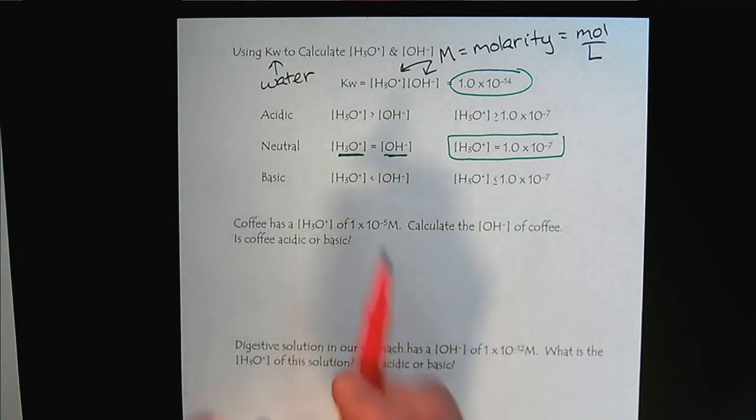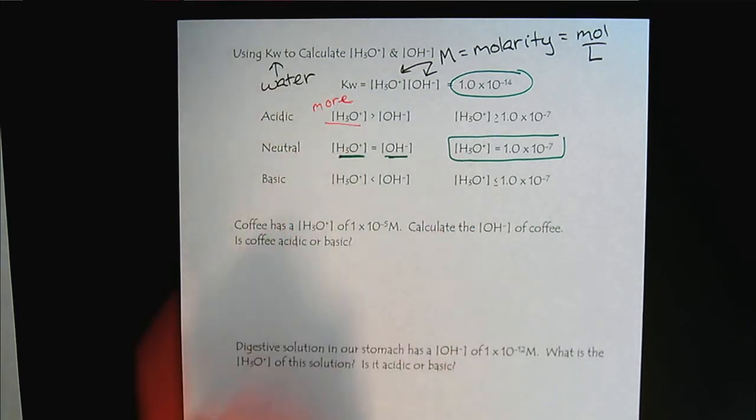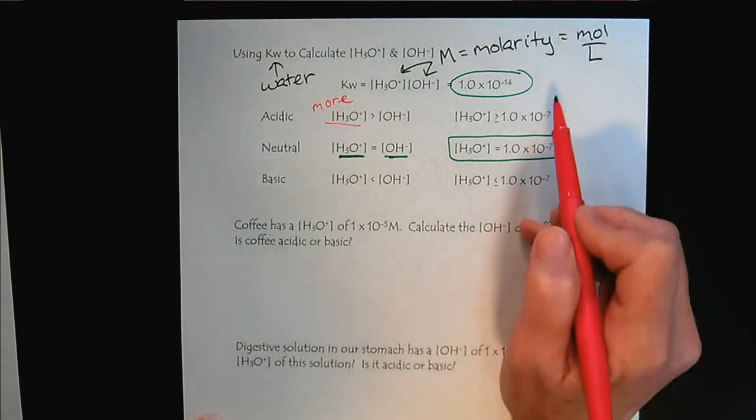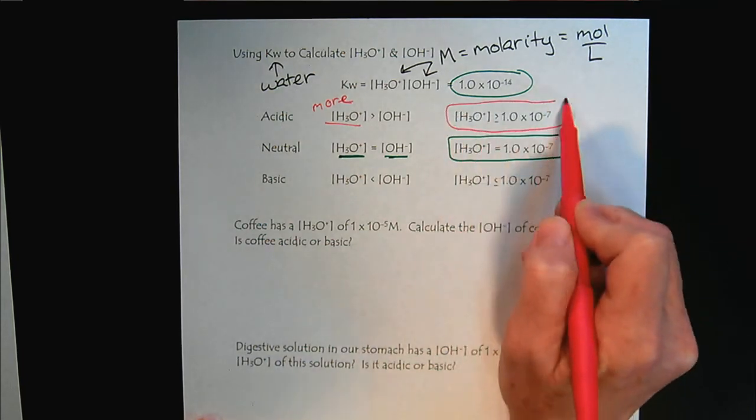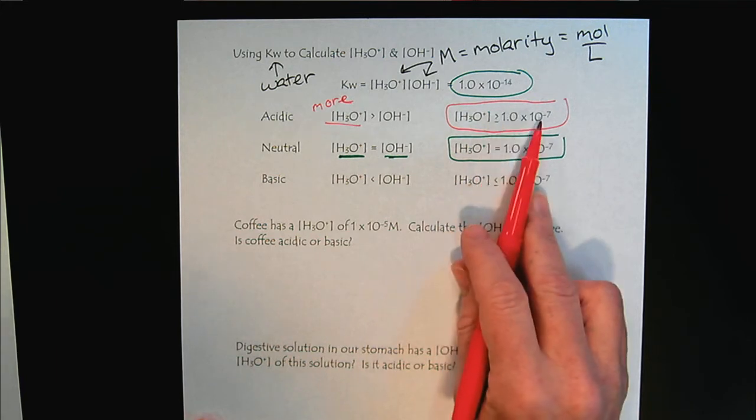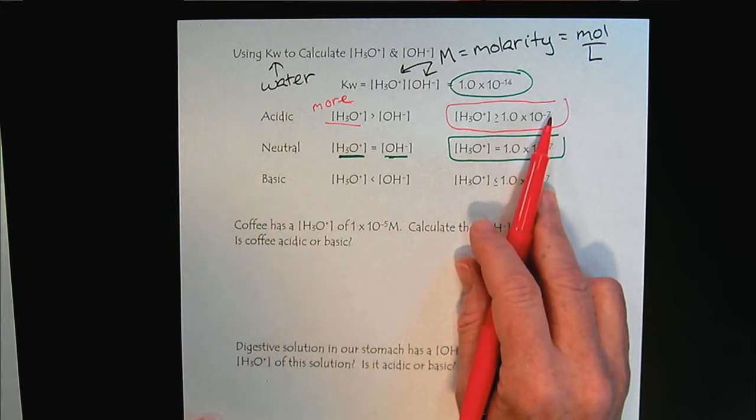So for acidic, we have a greater hydronium concentration. So mathematically, with these negative exponents, recognize that that means that the hydronium concentration is going to be greater than 10 to the minus 7. So since these are negative exponents, the exponential number becomes smaller.